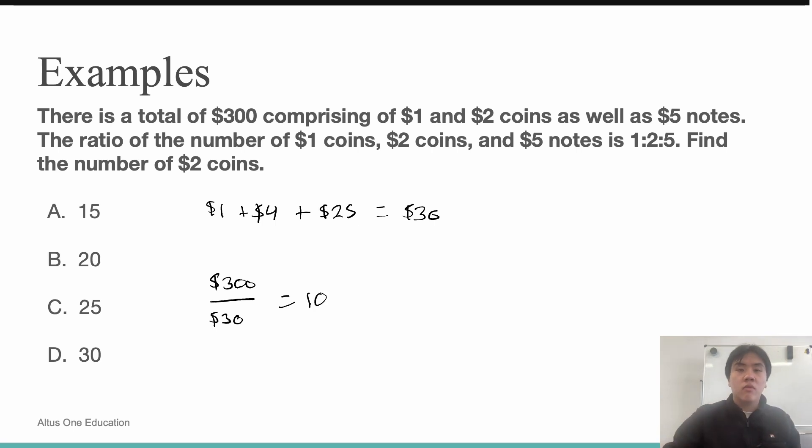So there are 10 of these mini ratios. If I'm trying to find the number of $2 coins, and I know that there are 10 ratios, and for each ratio, there are two $2 coins, I can multiply 10 by 2 to equal 20, which tells us that there are 20 $2 coins, so B.